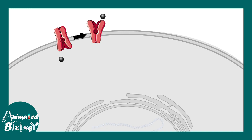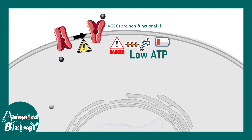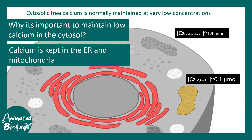Another problem the cell faces is calcium overload. Voltage-gated calcium channels on the cell surface are not functional optimally under low ATP, so calcium builds up inside the cell. Normally, cells maintain a low interior calcium level — extracellular calcium is quite high while intracellular calcium is very low. Whatever calcium is present in the cytosol is channeled into the ER and mitochondria, but when the cell swells this process is abrogated and the calcium gradient is not maintained.